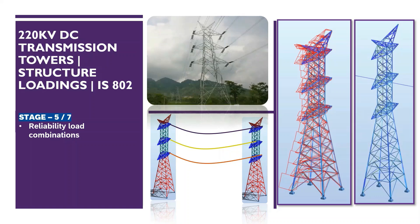In the first stage we discussed about the electromechanical input required for transmission line tower structure design. The second stage covered reliability load and wind load calculations. In the third stage we discussed the classification of various loads in terms of reliability, security and safety. The fourth stage covered temperature and sag tension calculations.